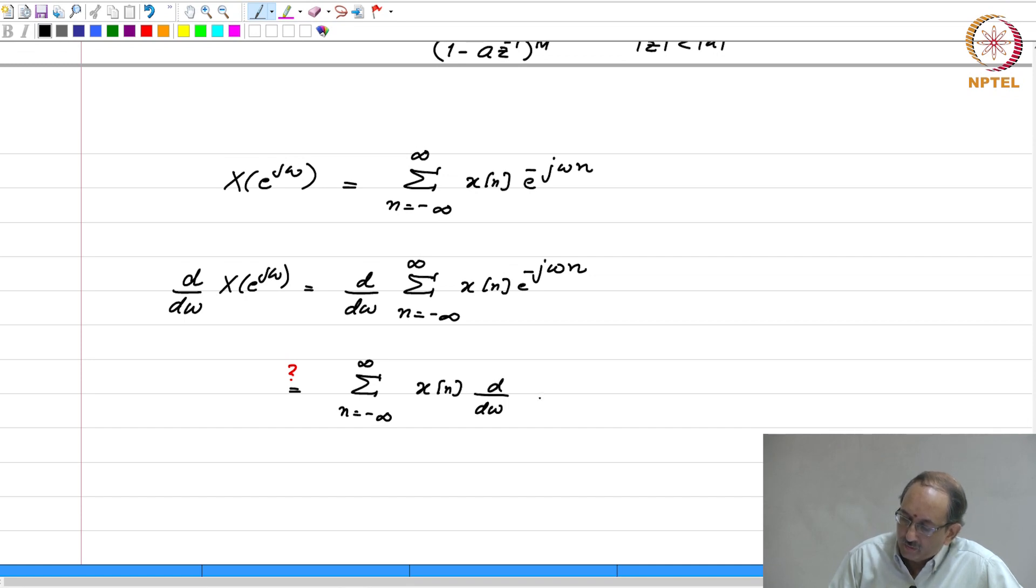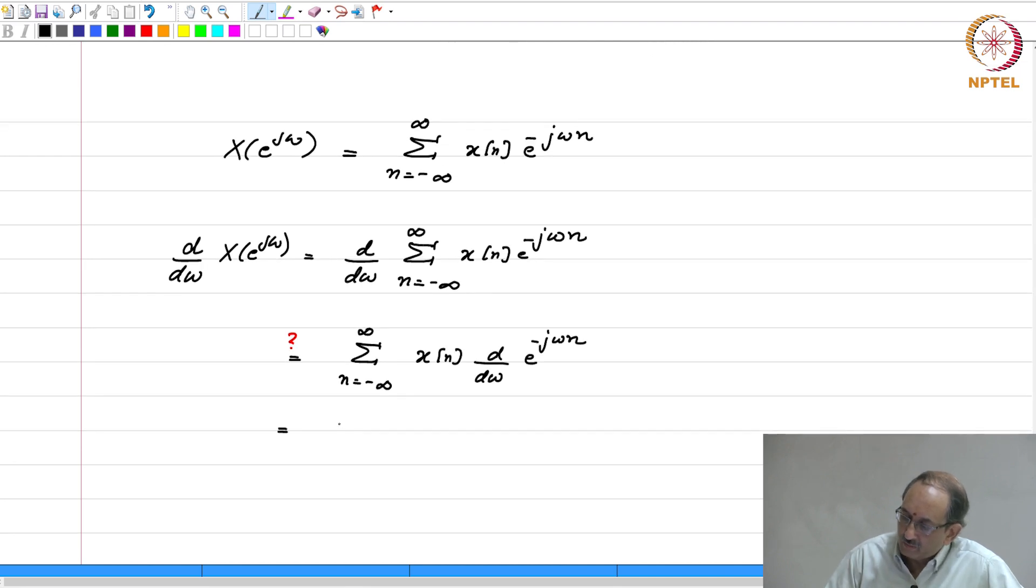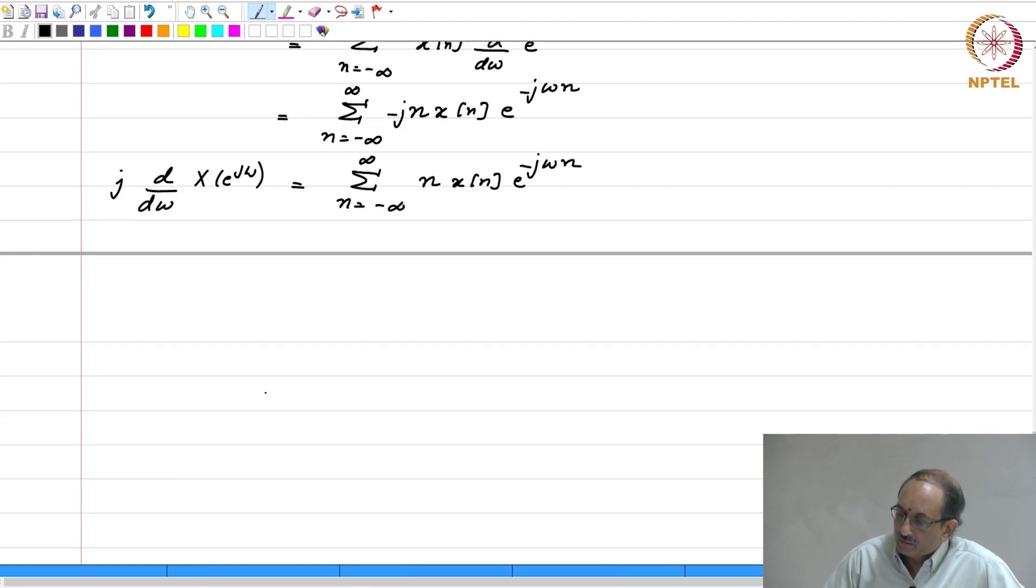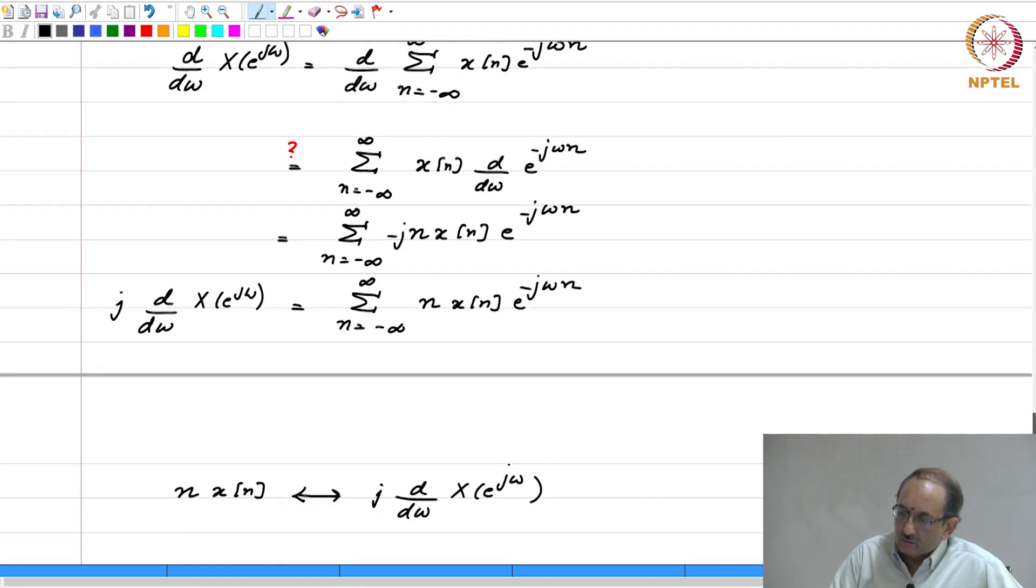Therefore, this is x of n d by d omega of e to the minus j omega n and therefore, this becomes minus j n times x of n e to the minus j omega n. And therefore, if you take j to the other side j times d by d omega of x of omega has this as the DTFT and hence the corresponding DTFT property is this. The only wrinkle here is the interchanging of these two limiting operations where for the DTFT we do not necessarily assume absolute summability.